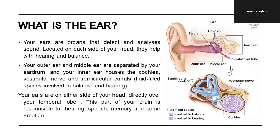Now we will see the ear. The ears are organs that detect and analyze sound; they are located on each side of your head and help with both hearing and balance. Your outer ear and middle ear are separated by your eardrum, and your inner ear houses the cochlea, vestibular nerve and semicircular canals. Your ears are on either side of your head directly over your temporal lobe — the part of the brain responsible for hearing, speech, memory and some emotions.